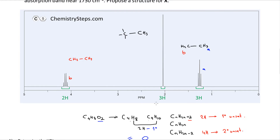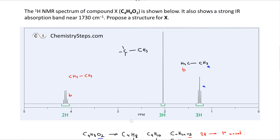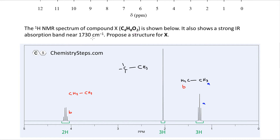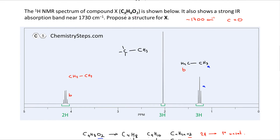We determined one degree of unsaturation. The IR data shows a signal at 1730 cm⁻¹ — around 1700 cm⁻¹ is one of the most important peaks in IR spectroscopy, representing a carbonyl group. So the molecule does have a carbonyl. Another way to see this: we have four carbons but only three NMR signals, meaning there is one carbon connected to no hydrogens — consistent with a carbonyl carbon.